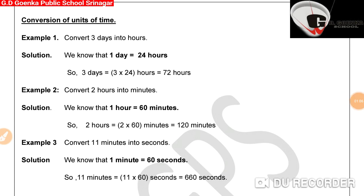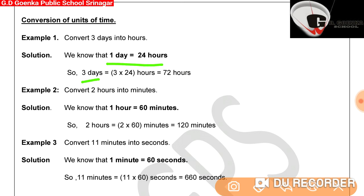Now let us do the conversion of units of time. In the first example, convert three days into hours. We know that one day is equal to 24 hours. So, three days will be equal to 3 into 24 hours, which is equal to 72 hours.